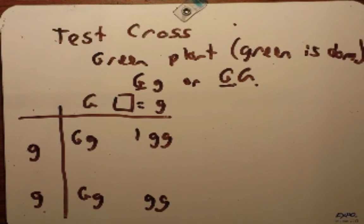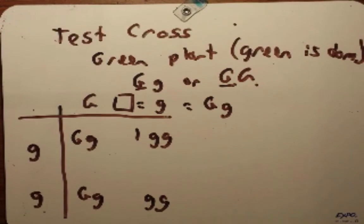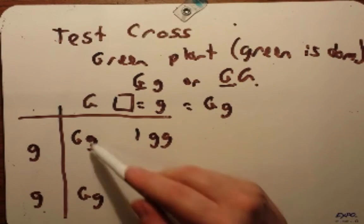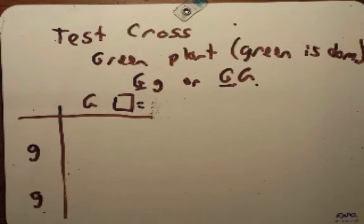So in doing a test cross, if it turns out that the strain in question was a big G little g, then the progeny should give you 50% wild type phenotypically and 50% recessive genotypically.